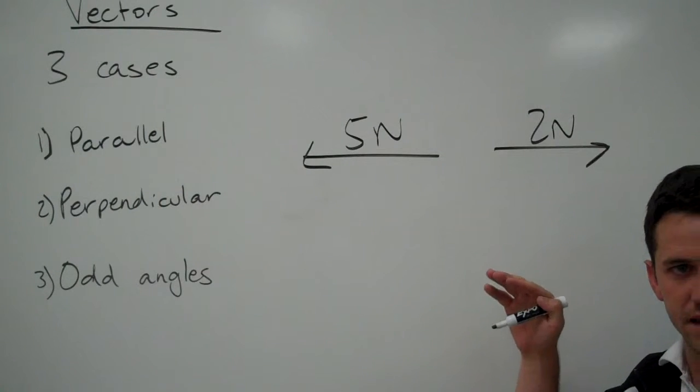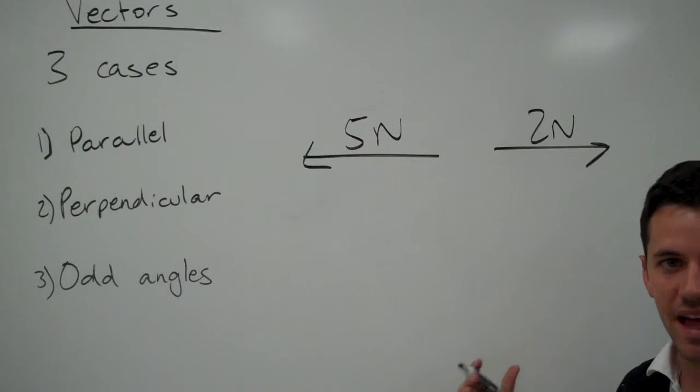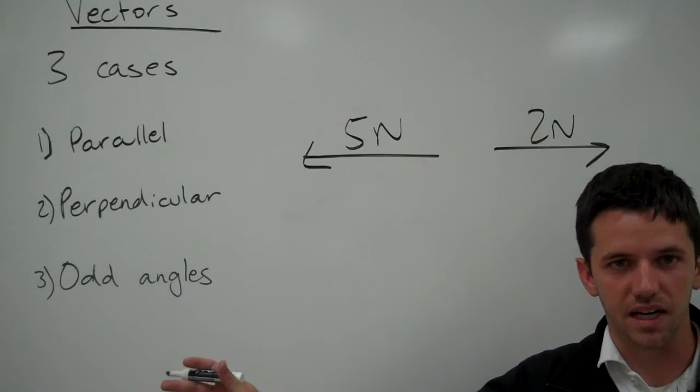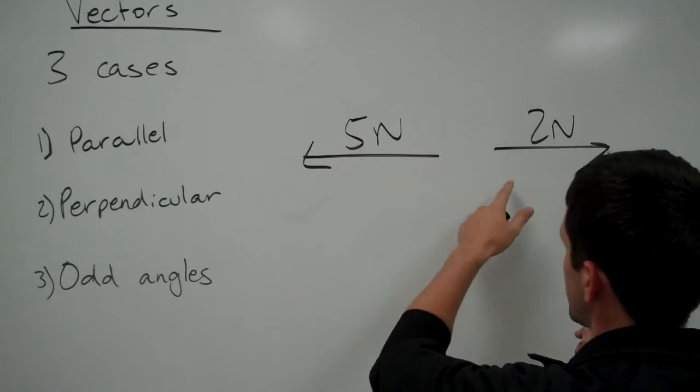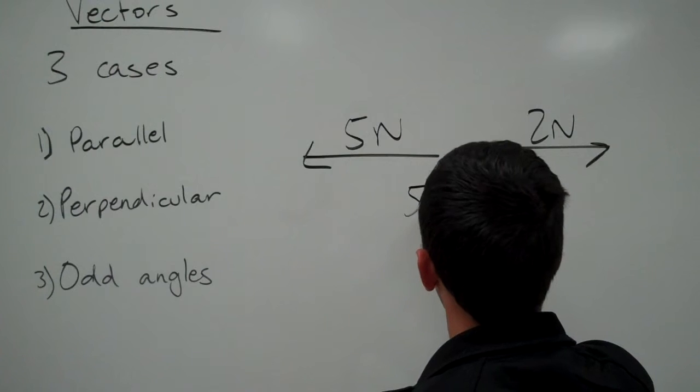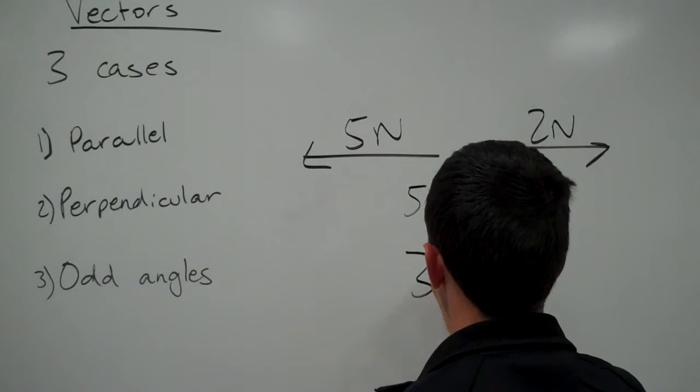They're still parallel, they're still in the same plane but they're going in opposite directions. So now if vectors go in opposite directions, we can subtract them. So we look at this and I have 5 minus 2 and I get a 3 newton vector.